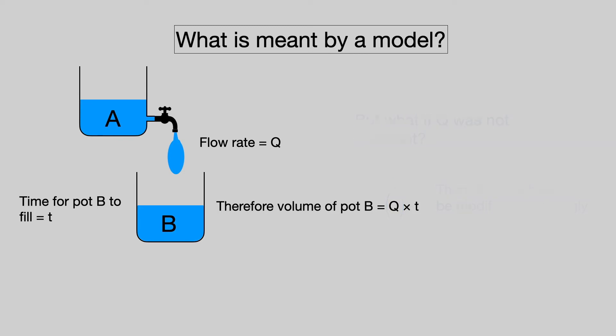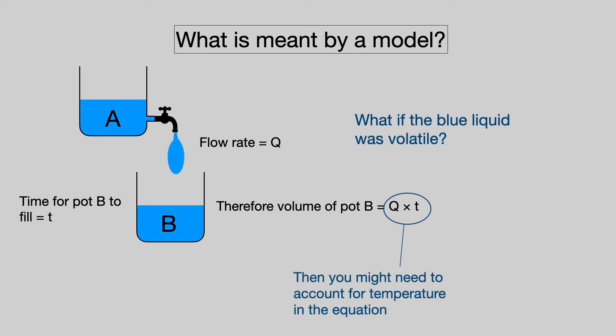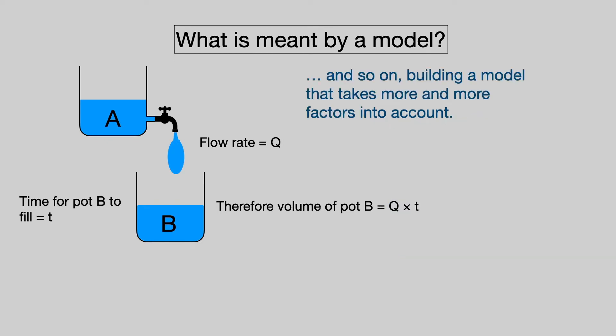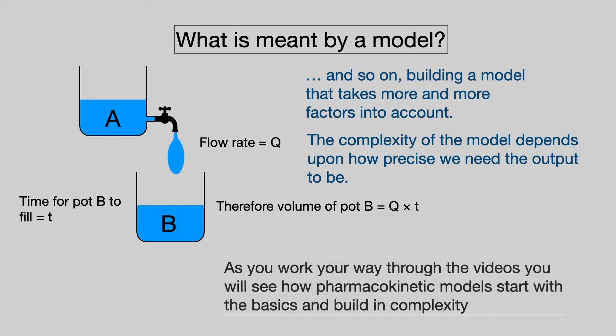Or what if the blue liquid was volatile? Then you may have to introduce some temperature-dependent part of that equation. And so on and so on, you build a model that takes more and more factors into account. Of course, you could go on virtually forever, putting more and more factors into the model. So we end up with a model that has a certain degree of complexity, depending on how precise we need the output to be. And as you work your way through these videos, you will see how pharmacokinetic models start with the basics and then build in complexity.